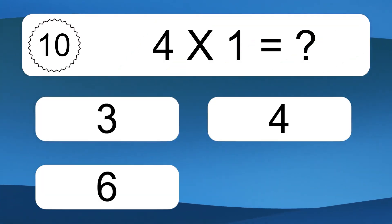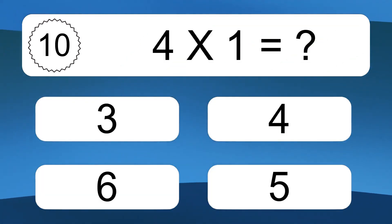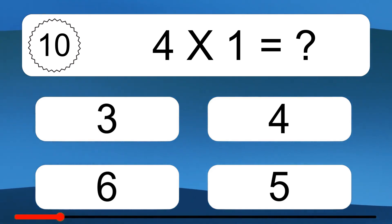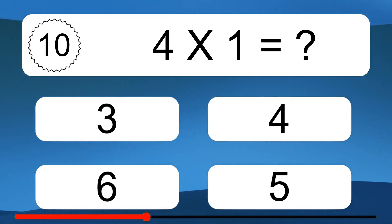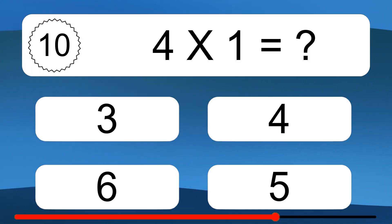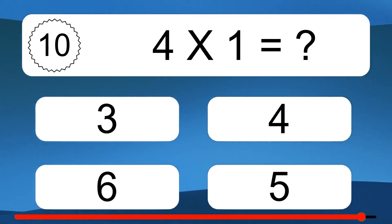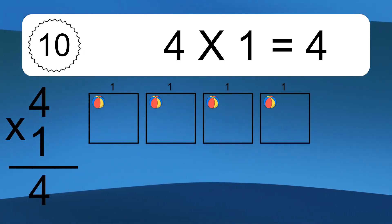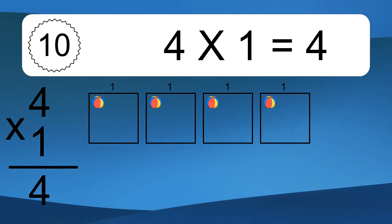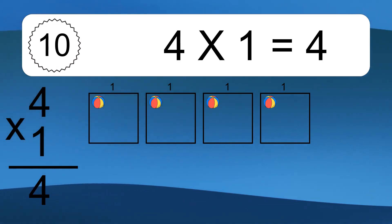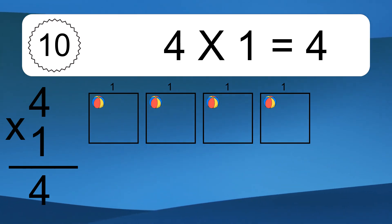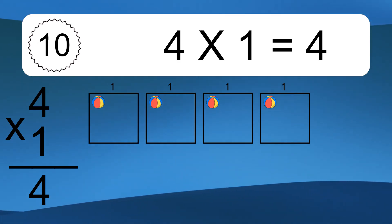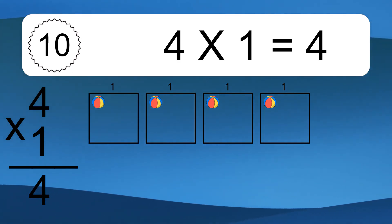4 times 1 equals what? We have 4 boxes, and each box has 1 colorful ball inside. If you count all the balls in all the boxes together, you will have 4 times 1 balls. This equals 4 balls.